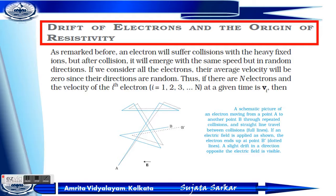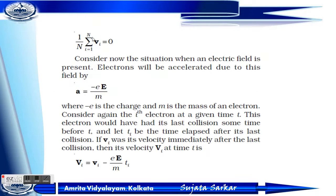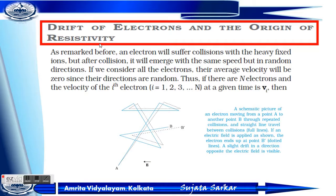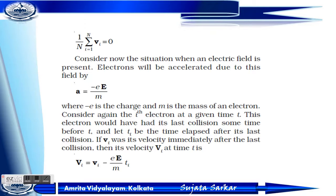First of all, we have to know what is drift velocity and what is relaxation time. An electron will suffer a collision with a heavy fixed ion, and after the collision it will emerge with the same speed but in a random direction. For all electrons, the average velocity will be zero for this random direction. We can write: (1/n) × summation from i=1 to n of vi equals 0, where n is the number of electrons and vi is the velocity.